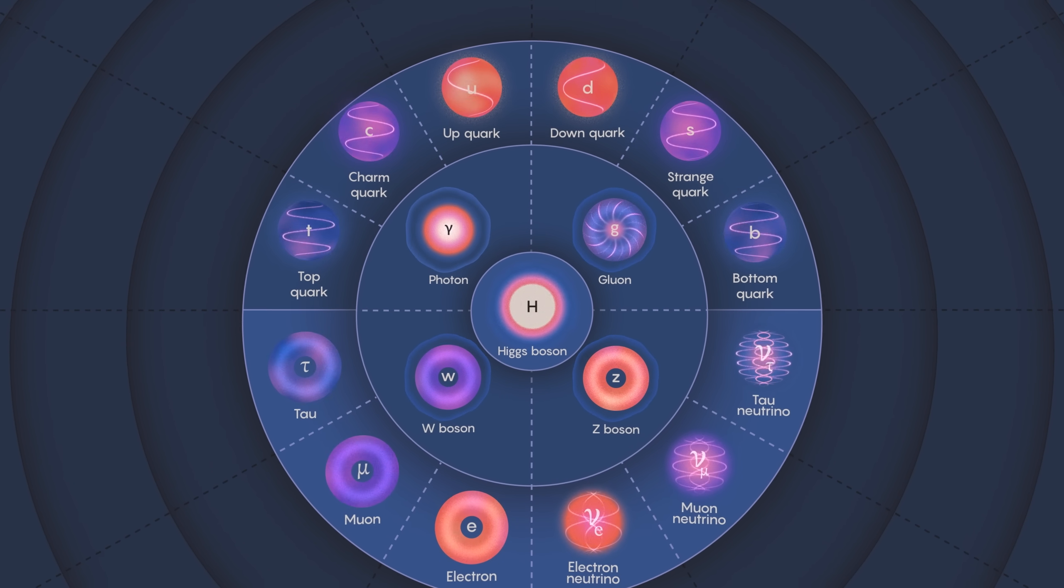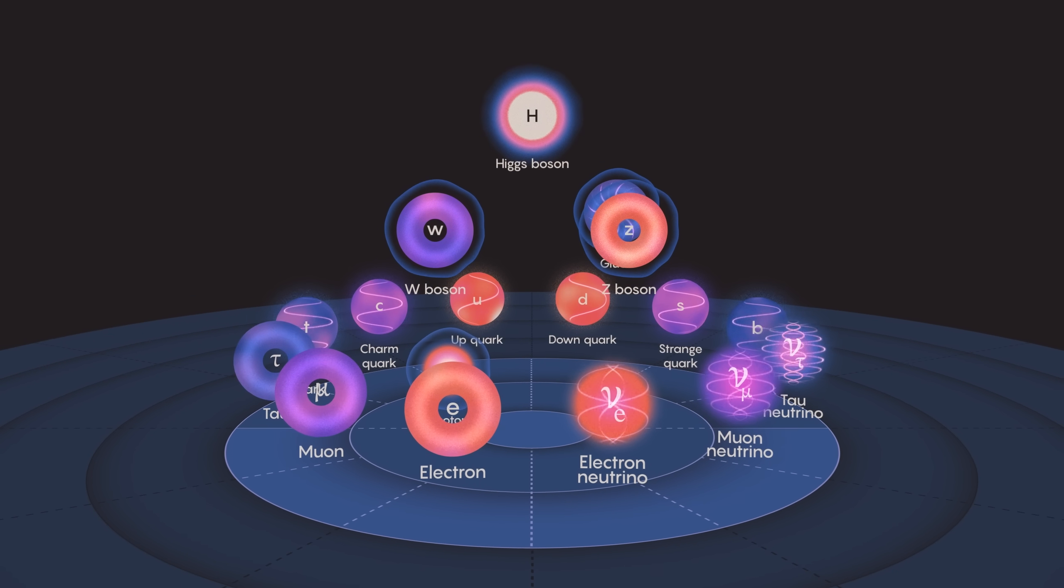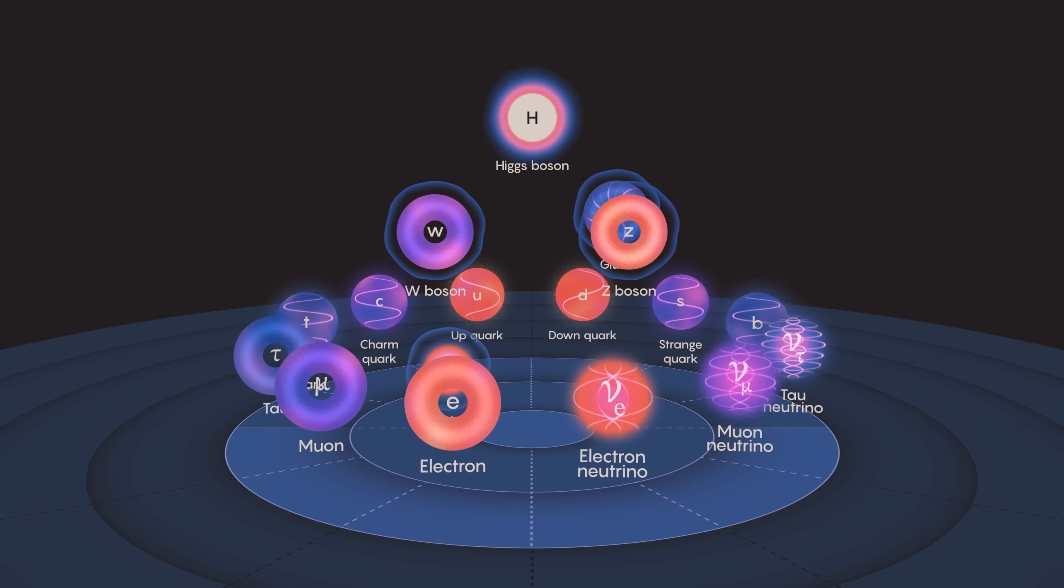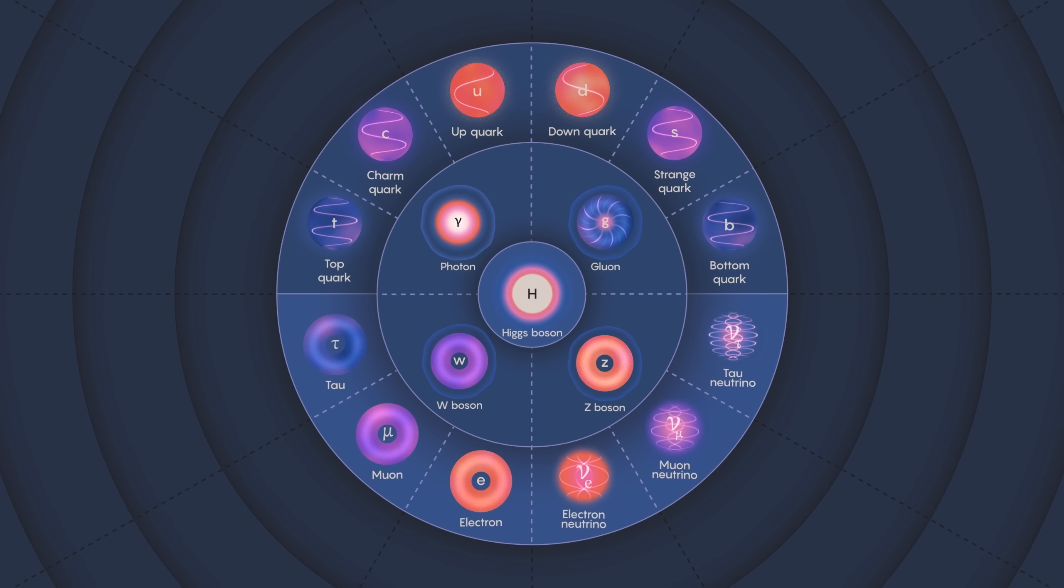So this is the standard model. 12 matter particles interacting with three forces and a Higgs field. It's a beautiful picture, the pinnacle of 400 years of science. But it's clear that the standard model is not the last word in physics. Since the discovery of the Higgs boson, physicists like me feel that in many ways, the standard model is too successful. It gives the right answer to every experiment that we do. Our current hope is that we'll eventually find an experiment that it gives the wrong answer to. And there are some hints that this is happening. Because only then can we get clues about what lies beyond.